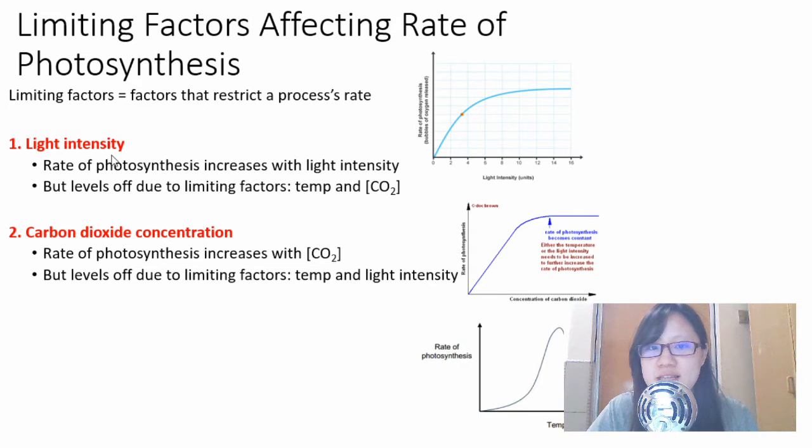If the light intensity graph levels off, this is probably due to temperature or concentration of carbon dioxide. Whereas if the carbon dioxide concentration graph levels off, this is probably due to temperature and light intensity.